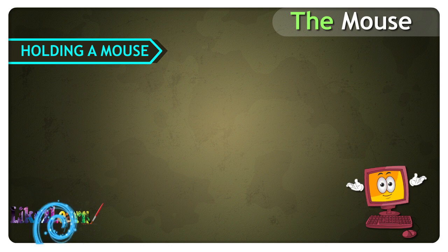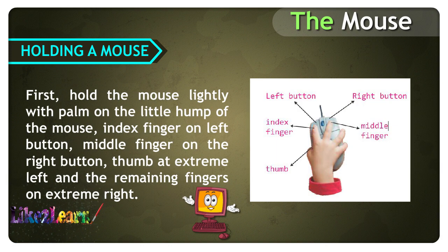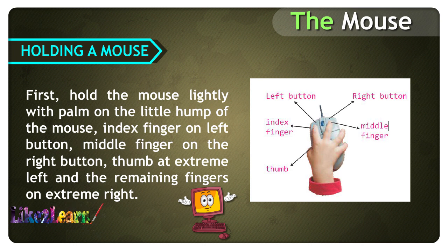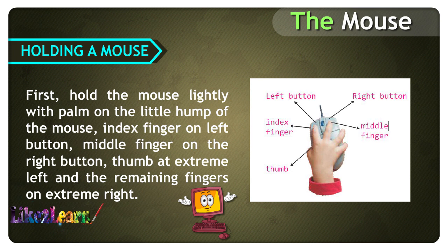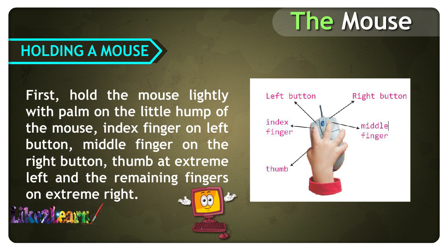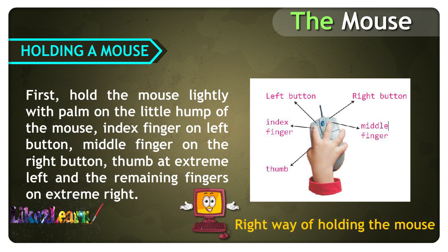Holding a mouse. First, hold the mouse lightly with your palm on the little hump of the mouse. Place your index finger on the left button, middle finger on the right button, thumb at the extreme left, and the remaining fingers on the extreme right. This is the right way of holding the mouse.